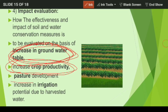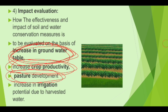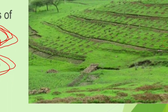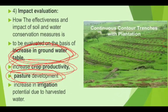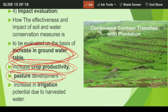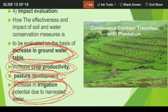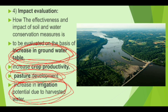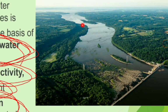Number three in impact evaluation is pasture development. Whether there is increase in the pasture — if the pasture area is increased, we can say our work has effectively given results. The next criterion is increase in irrigation potential for harvested water. If there is increase in irrigation potential, we can observe an increase in water quantity in the watershed area, which can be used for agriculture and drinking purposes.